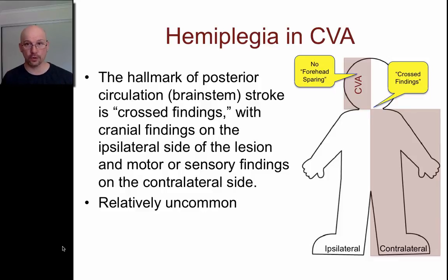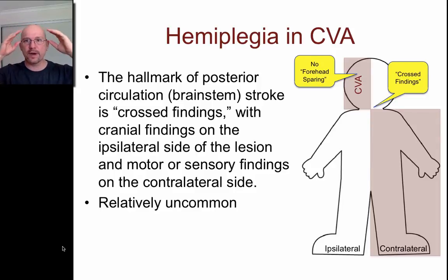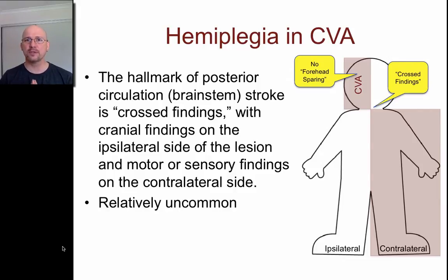We've talked about strokes now in a fair bit of detail — the difference between middle cerebral artery and posterior cerebral artery, upper motor neuron and lower motor neuron. We've talked about dividing our clinical assessment into forehead, face, and body. Now I want to revisit something from the beginning of this lecture: not all hemiplegia is due to CVA. There are other causes, and one major one is called Bell's palsy.